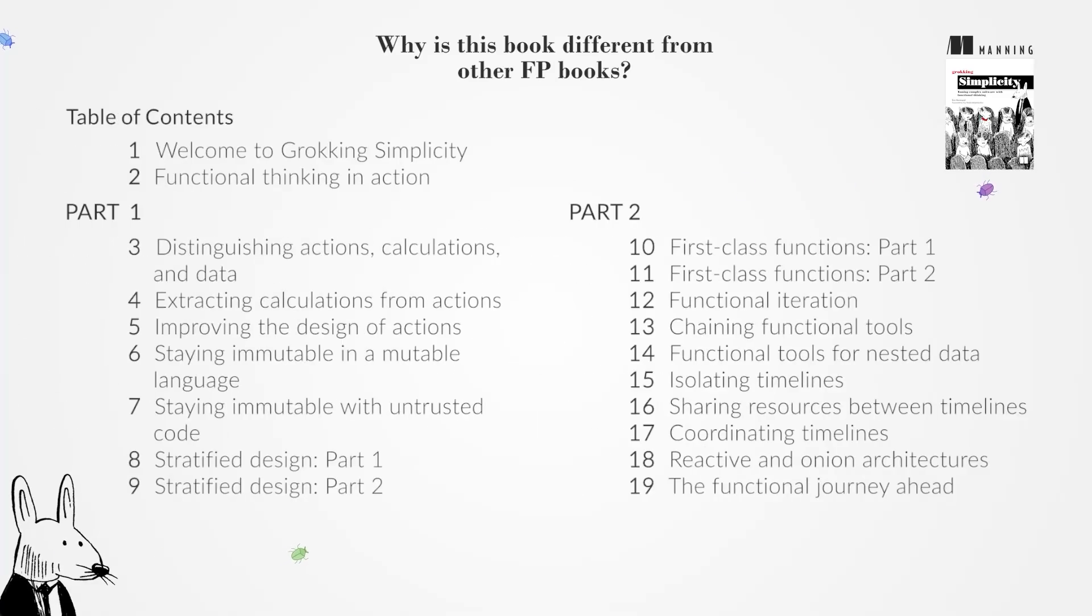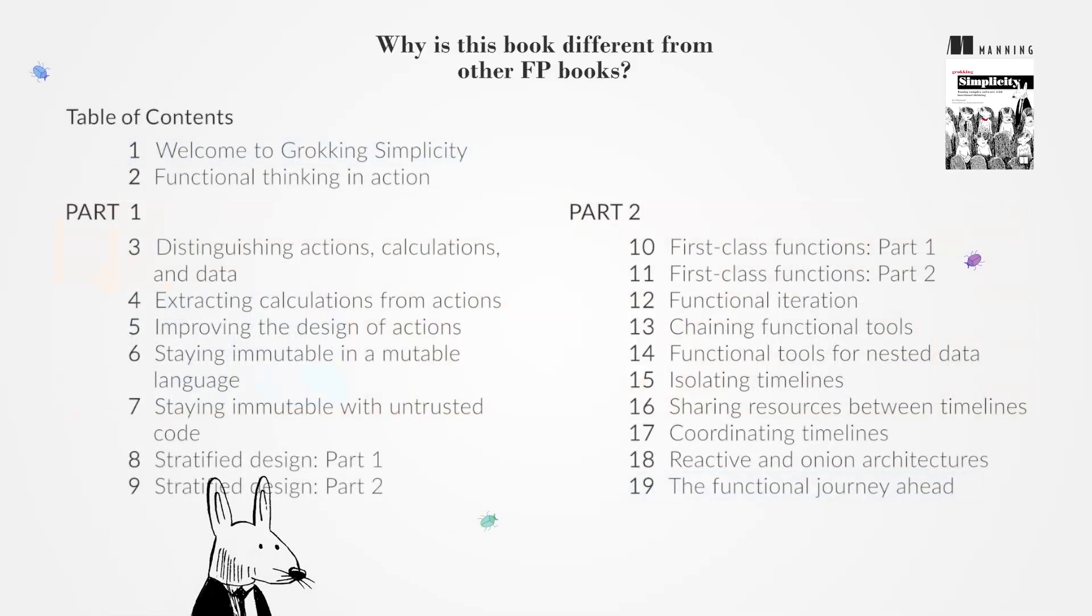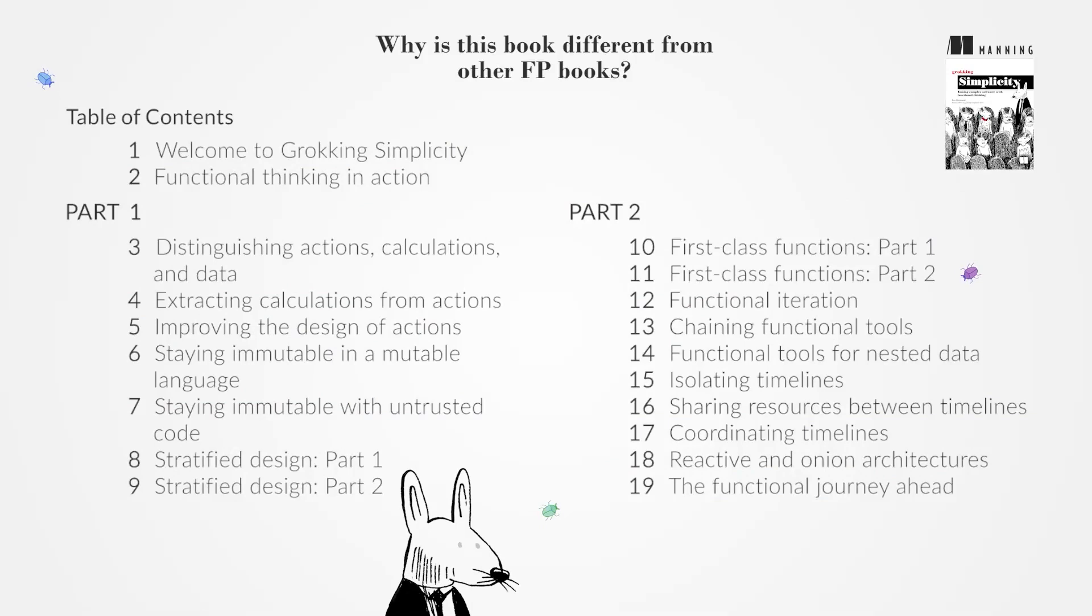This book is practical for software engineering, focusing on real-world scenarios and software design. It conveys FP's richness, using JavaScript for examples to teach principles applicable across languages. The book emphasizes functional thinking, guiding readers through two powerful ideas: distinguishing actions, calculations, and data, and using first-class abstractions.